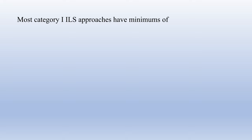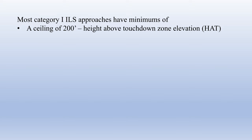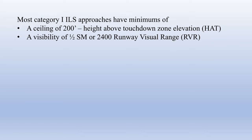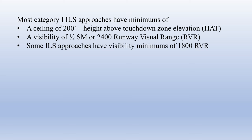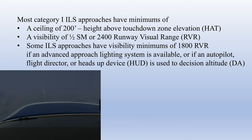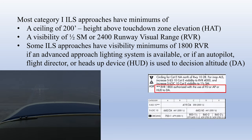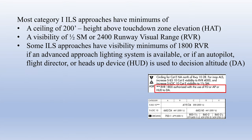While each ILS approach is unique to the runway it serves and minimums can vary, most Cat 1 ILS approaches have minimums of around a ceiling of 200 feet height above touchdown zone elevation and a visibility of ½ statute mile or 2400 RVR. Some ILS approaches have visibility minimums of 1800 RVR, usually requiring either an advanced approach lighting system such as an ALSAF-2 type, or an aircraft with an autopilot, flight director, or heads-up device used to decision altitude. Some ILS approaches may also have higher minimums due to terrain or other local factors.